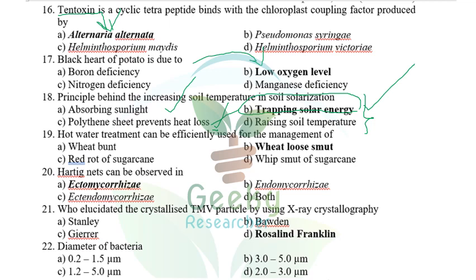Hot water treatment is especially recommended for wheat loose smut (Ustilago) and covered smut. Hart ignits (Hartig net) are observed in ectomycorrhizae — in endomycorrhizae, no Hartig net is found.